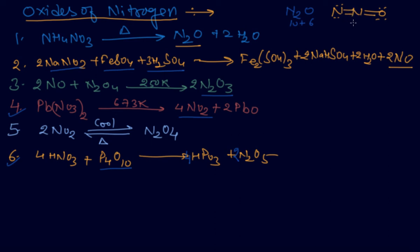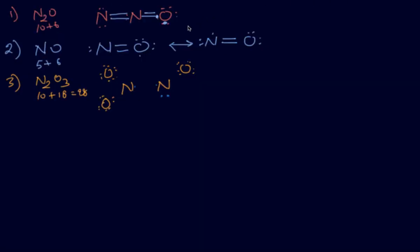One structure of N2O has a nitrogen-nitrogen triple bond and a single bond to oxygen, with oxygen capturing six electrons. Another resonance structure can also be drawn. These structures can be asked in the exam.